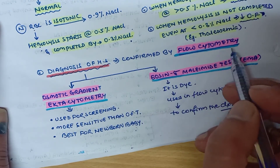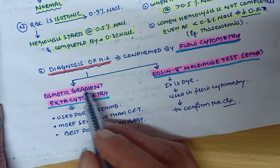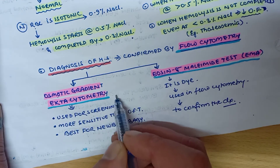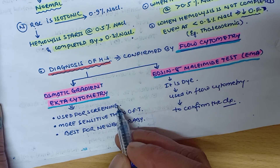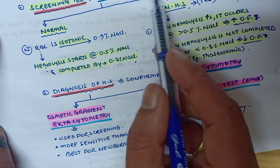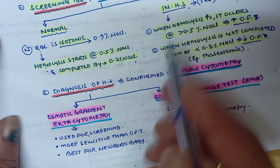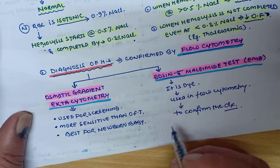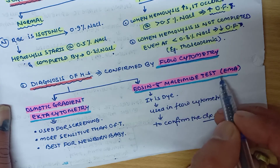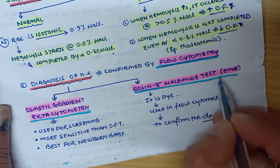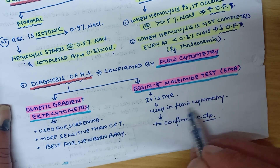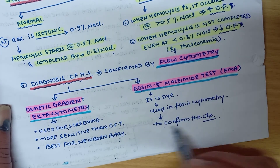The diagnosis of hereditary spherocytosis can be confirmed by flow cytometry. Another screening test is osmotic gradient ektacytometry, which is more sensitive than the Pink's osmotic fragility test and is best for newborn babies. Eosin-5-maleimide is a dye used in flow cytometry to confirm the diagnosis.